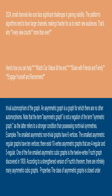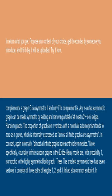Properties: the class of asymmetric graphs is closed under complements. A graph G is asymmetric if and only if its complement is. Any n-vertex asymmetric graph can be made symmetric by adding and removing a total of at most n/2 + 1 edges.